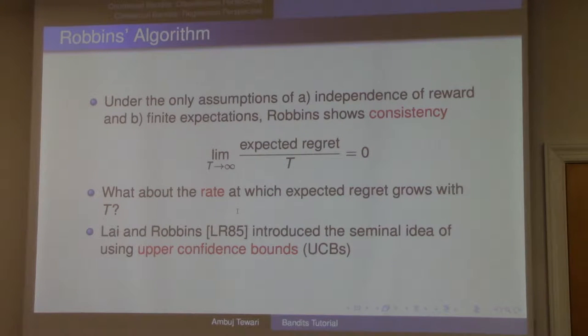I have my empirical estimates. In this simple case, I have my sample means for each of the arms. Those means are based on some observations, right? Maybe for arm one I have 15 observations, for arm two I have three observations, so they're based on different observations.